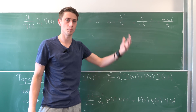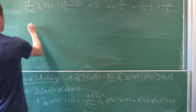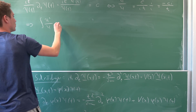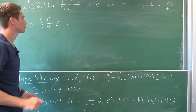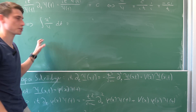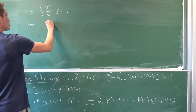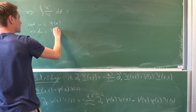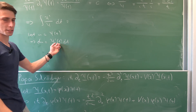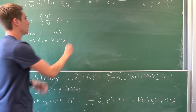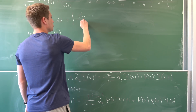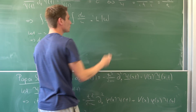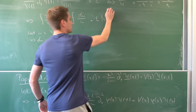Now we integrate both sides with respect to t. For the left side, we use u-substitution: let u equal psi of t, so du equals psi prime of t dt. The integral becomes the integral of du over u, which is just the natural log of u — so we get the natural log of the absolute value of psi of t. On the right hand side we just get minus c times i over h-bar times t.